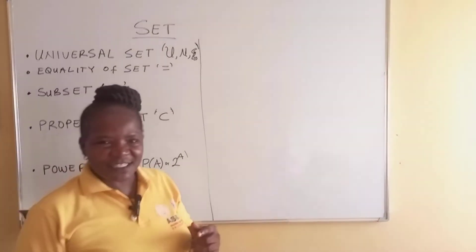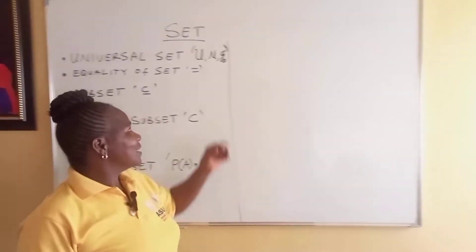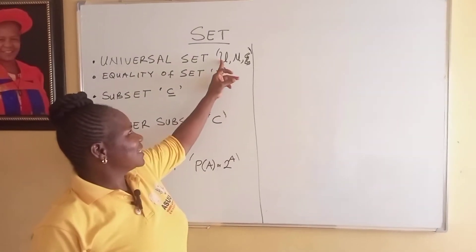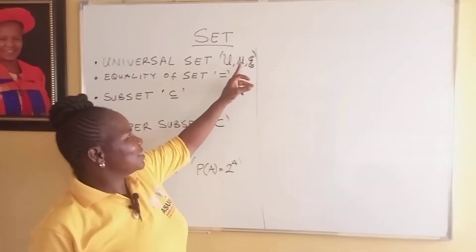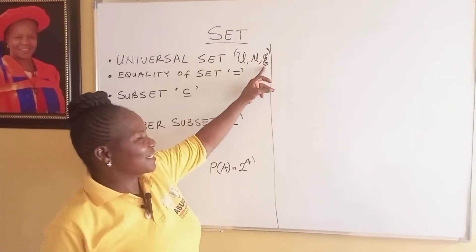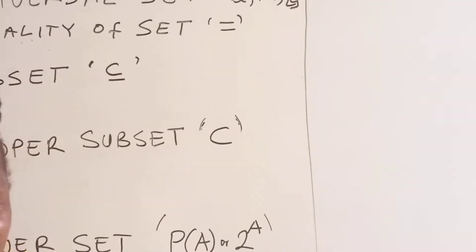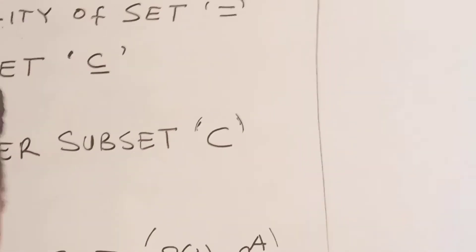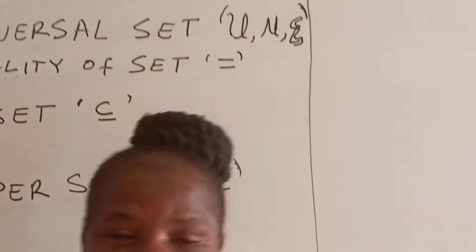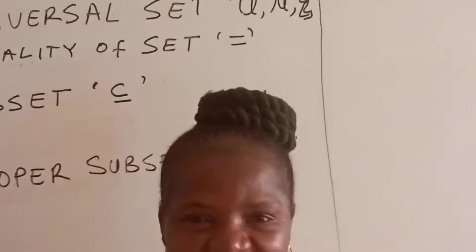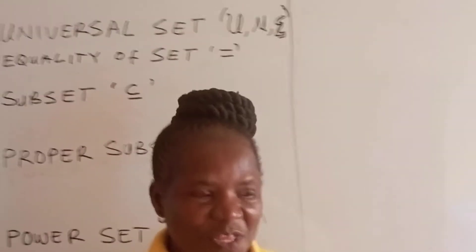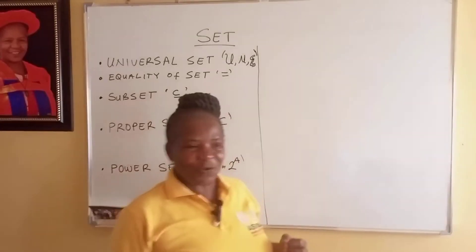You denote it with this symbol. You can use this to denote it, or you can use anything and tell us that that thing is a universal set. It's a matter of notation.